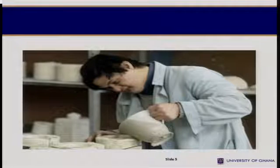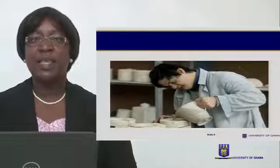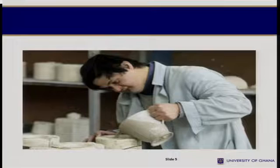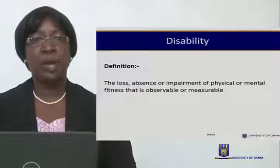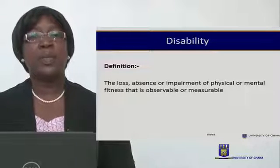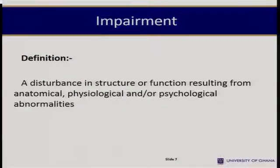Take a critical look at the picture and, as nurses, critically describe what you find and what you think is wrong with the person shown. By definition, disability is the loss, absence, or impairment of physical or mental fitness that is observable or measurable — meaning when we talk about disability, it should be seen and it should be measured.